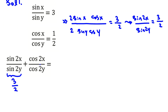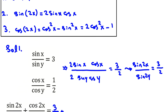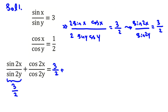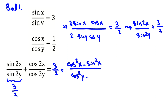Now we want to focus on finding the second part. It will be 3 over 2 plus cosine 2x, which equals cosine squared x minus sine squared x, all over cosine 2y, which equals cosine squared y minus sine squared y. From the given conditions, cosine x equals cosine y over 2, and sine x equals 3 sine y.